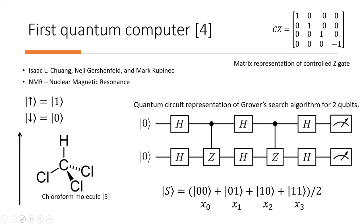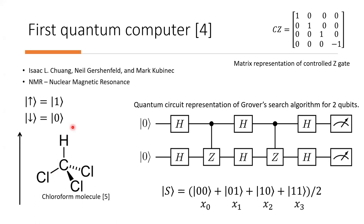Decoherence would cause the computer to lose information. The method they developed was completely different from those used today. Instead of trying to control a single molecule or ion, they took a great number of them. In the experiment, researchers used a chloroform molecule, which consists of a carbon atom surrounded by three chlorine atoms and a hydrogen atom. The molecule was placed in an external magnetic field using NMR — nuclear magnetic resonance — and the spins of the atoms can be either aligned or anti-aligned with the external magnetic field.